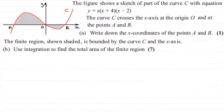Hi there. Now in this question we're shown this figure here. It shows a sketch of part of the curve C with equation y equals x multiplied by x plus 4 multiplied by x minus 2. And the curve C crosses the x-axis at the origin and at the points A and B.